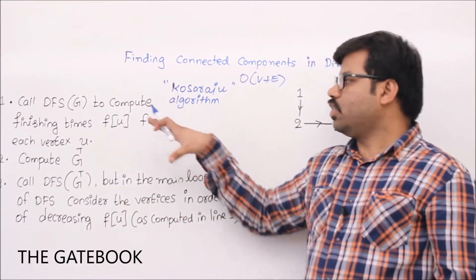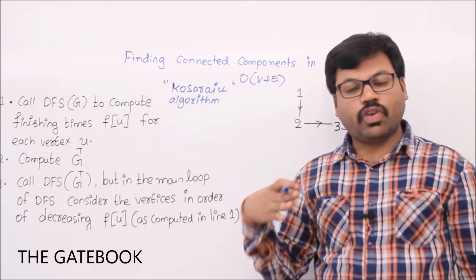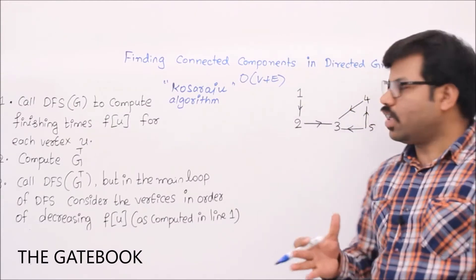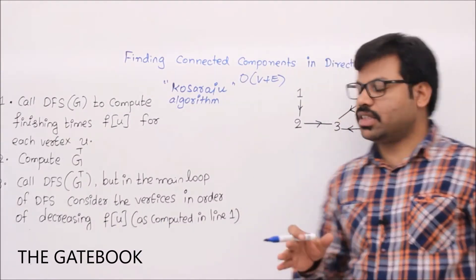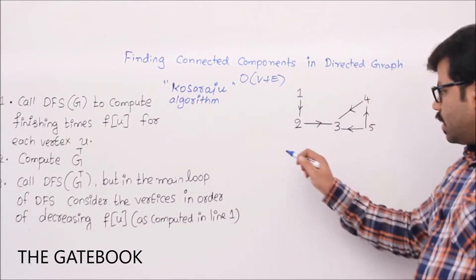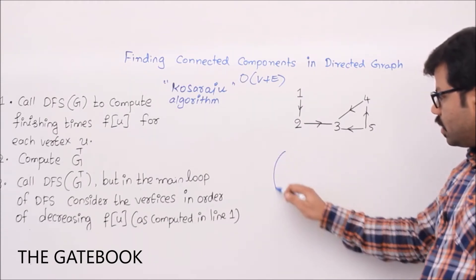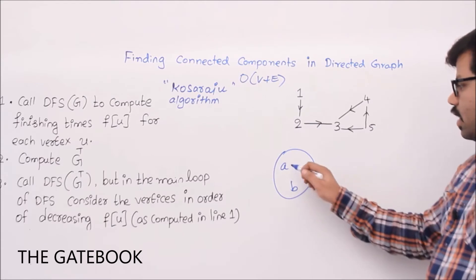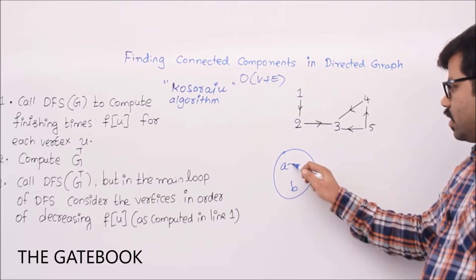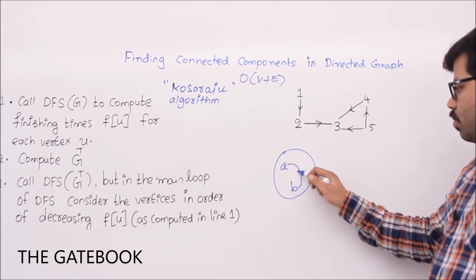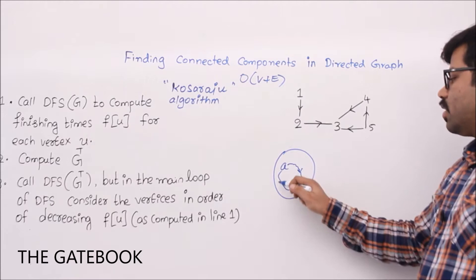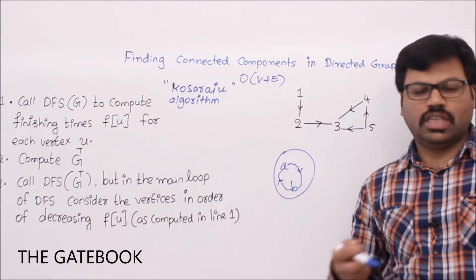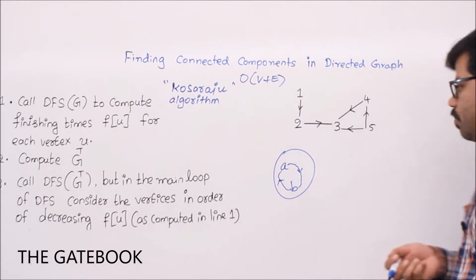We are going to execute Kosaraju's algorithm to find connected components in a directed graph. Before that, what is a connected component? Whenever we say two vertices belong to the same connected component in a directed graph, the necessary and sufficient condition is: there should be a path from A to B and also from B to A. Then we say A and B belong to the same connected component.